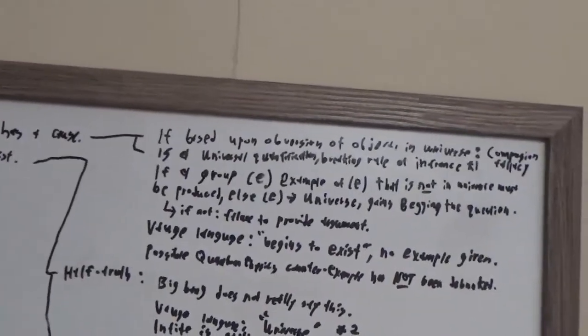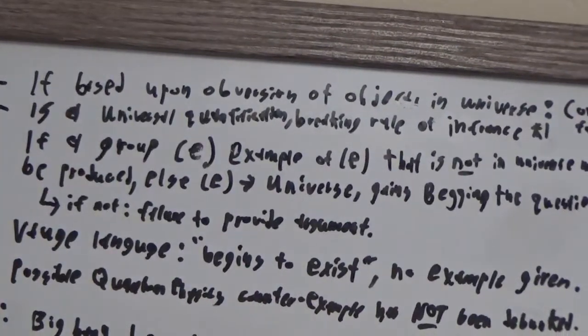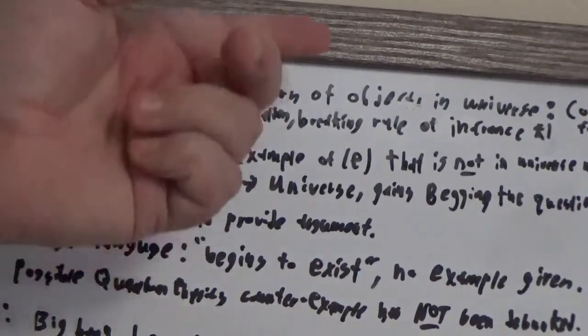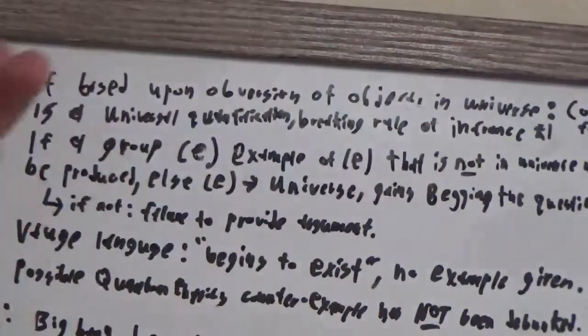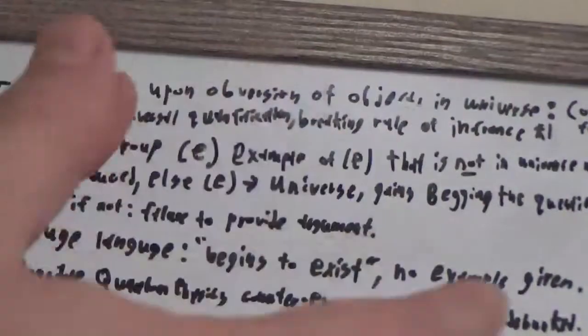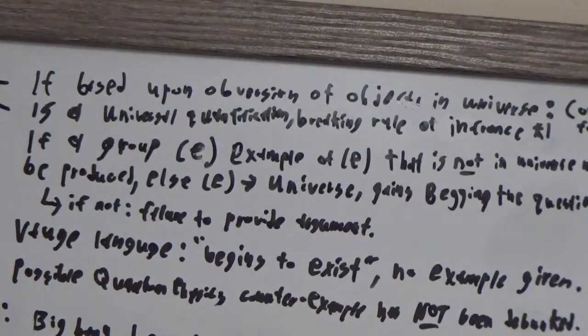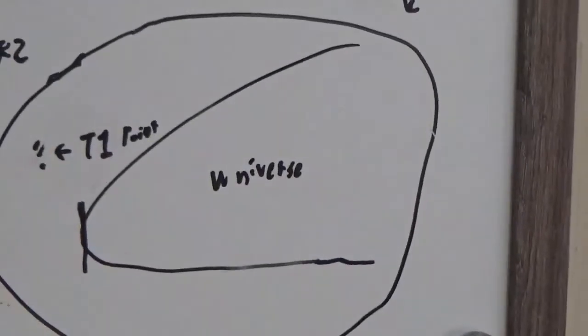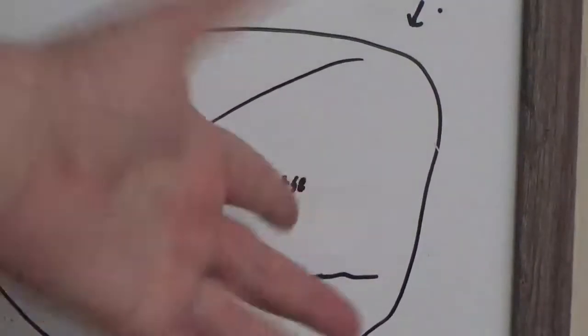Premise 1 has multiple problems. If it's based on observation of objects inside of the universe, then this is the compositional fallacy. The parts don't necessarily equal the whole. Just because the things inside of the universe behave in a certain way, it does not mean that the universe as a whole behaves in the same way.